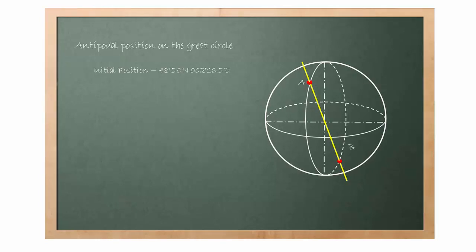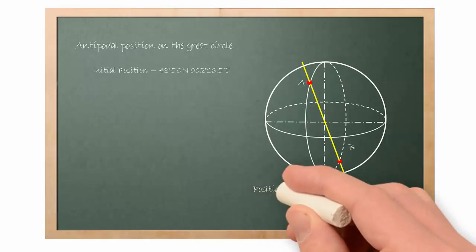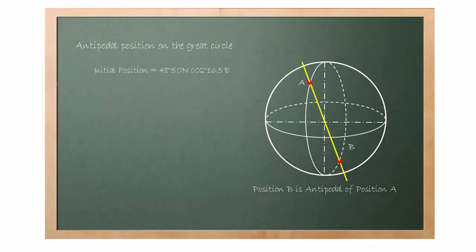In our diagram, the yellow stick does come out at B. Thus, position B is antipodal position of A.